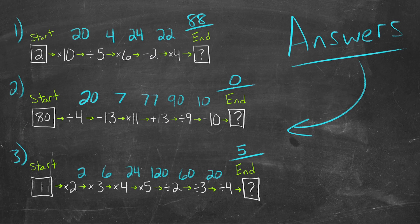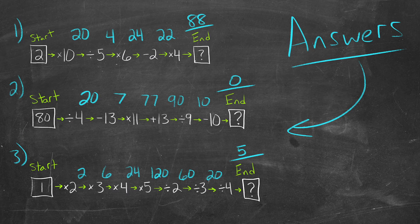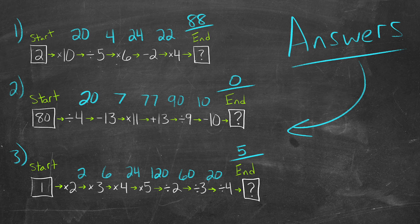Let's take a look at the answers and the explanations of how we get there. For number one, we start with 2 — times 10 is 20, divided by 5 is 4, times 6 is 24, minus 2 is 22, times 4 gives us 88. For number two, we start with 80 — divided by 4 is 20, minus 13 is 7, times 11 is 77, plus 13 is...